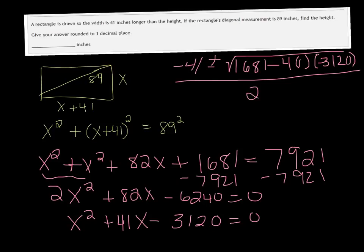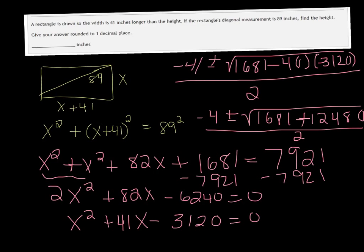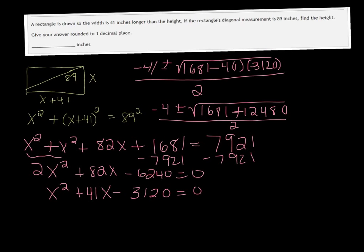Alright, so, 4 times 3120 is 12,480. So, we get negative 4, plus or minus the square root of 1681 minus 12,480. No, actually plus, because we have a negative times a negative. And we need to get some more space here. I thought I could erase, but I don't see an eraser. Alright, so, this at least separates them. Sorry about that.